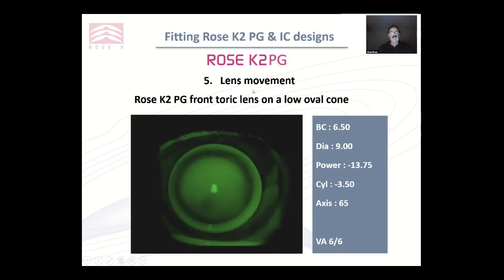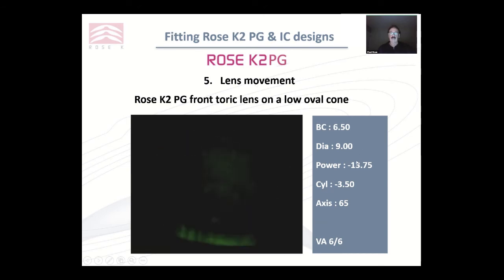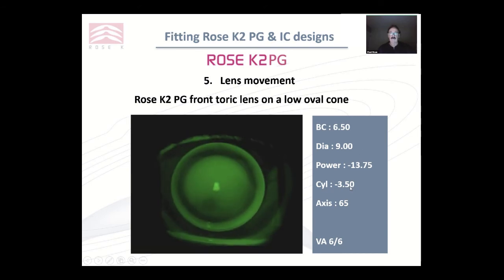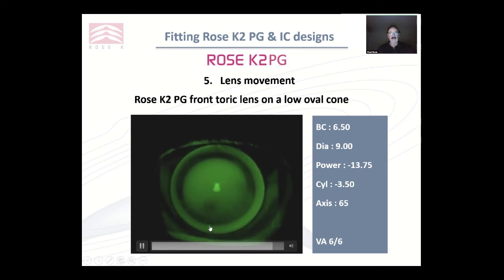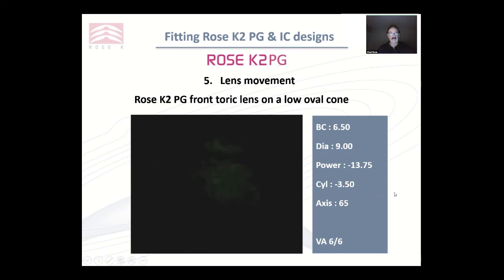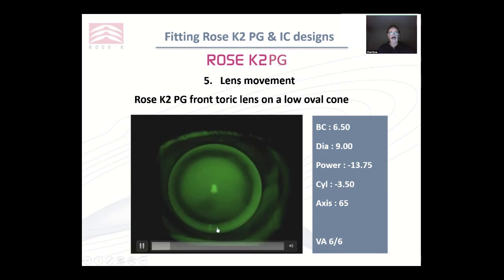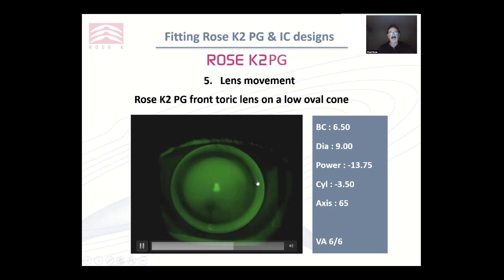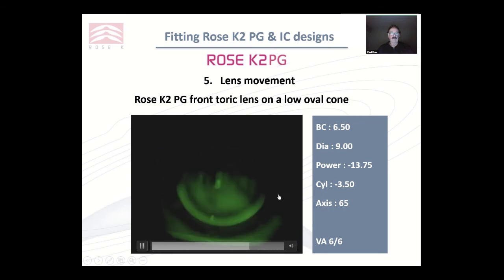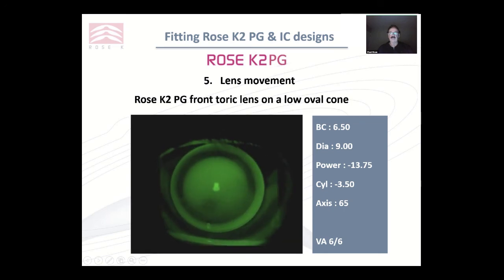Here again is ideal lens movement. This is a post-graft front arc lens — we've got a 350-dot prism at oblique axis. That little dot indicates the base of the prism. You can see how stable it is. The patient is blinking and we're not getting any rotation. We've got slight feather touch, which is what we want to achieve, and a lovely peripheral fit. This would be a very successful lens.